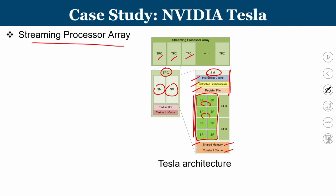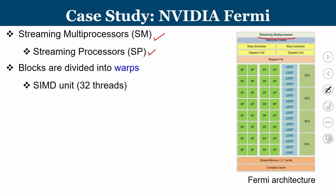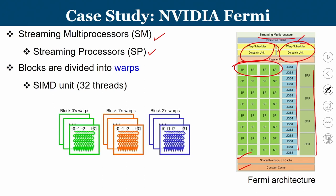The next version from NVIDIA was the Fermi architecture, which has streaming multiprocessors (SMs) containing streaming processors (SPs). Blocks are divided into warps, and SIMD units handle 32 threads. The Fermi SM includes an instruction cache, warp scheduling and dispatching, load/store units, functional units, streaming functional units, and shared/constant memory. As discussed previously, block warps are scheduled in this architecture similarly, where the set of all activities happening in one clock cycle is defined as one warp.